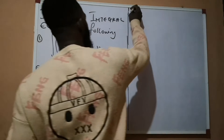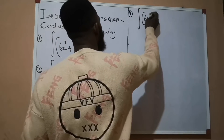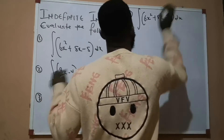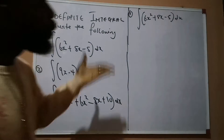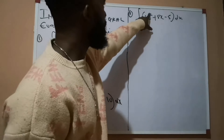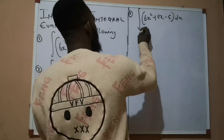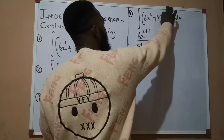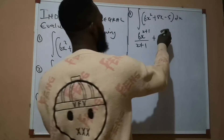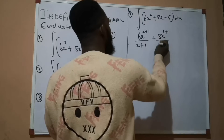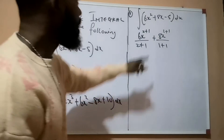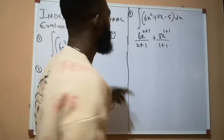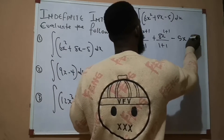Question number one says: integrate 6x² + 8x − 5 dx. When integrating, you add 1 to the power. The first power is 2, so it becomes 6x raised to power 2+1 over 2+1. For 8x, the power is 1, so it becomes 8x raised to power 1+1 over 1+1. Now 5 is a constant, and when you integrate a constant the answer is 5x. So this becomes minus 5x plus k.